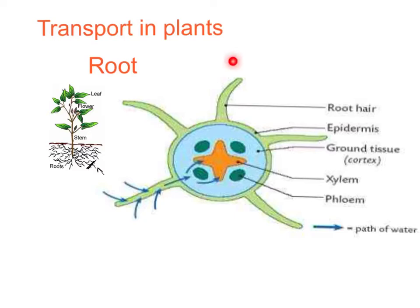We've got our trusty root hair cells here, increasing the surface area for diffusion — and active uptake as well, they're involved in that. So water moves in through the root hairs into the xylem, and it's going to go off up the stem in the transpiration stream.